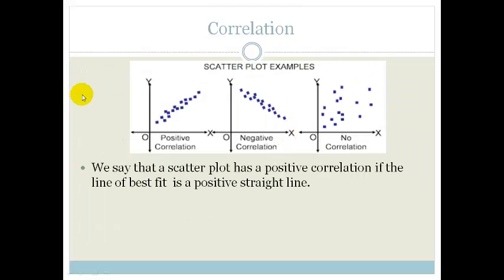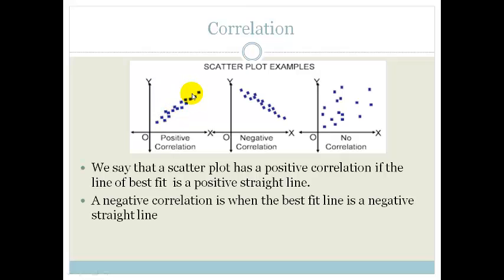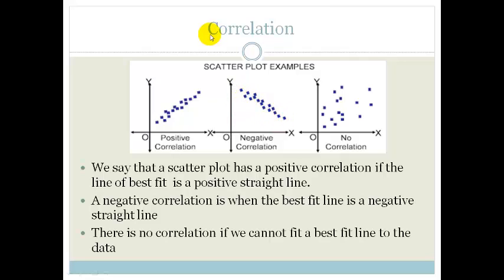So, your correlation. If we have a scatter plot with a positive correlation, it means the line of best fit is a positive straight line. A negative correlation means that the best fit line is a negative straight line. And no correlation means it just looks like there's a random set of dots.